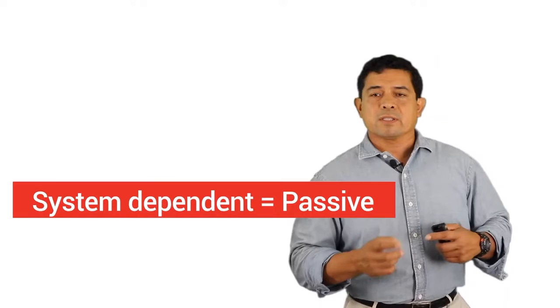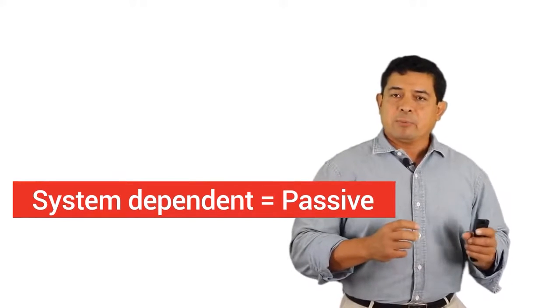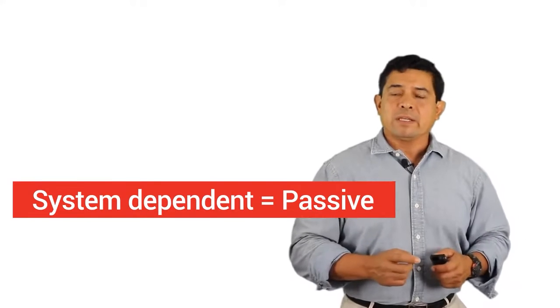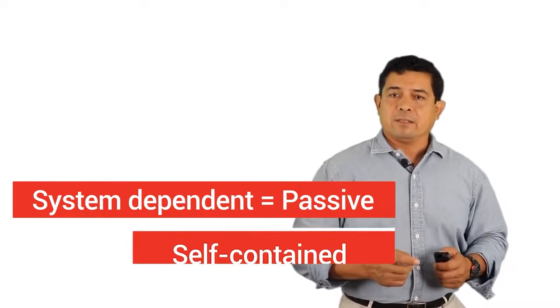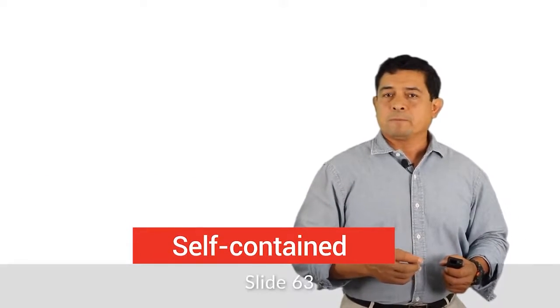When you recover refrigerant, there are really two ways to do this. One is what they call system-dependent, or in other words, passive. The other one is self-contained. Those are the two ways that we recover refrigerant.